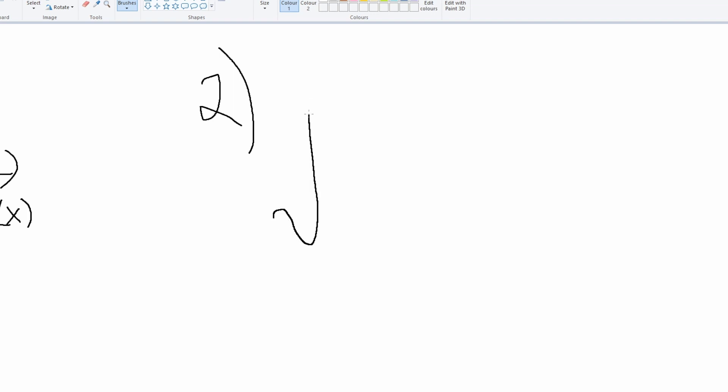The second question is a definite integral, so it has bounds. The integral from 1 to square root of 3 of (arctan(x) + arccot(x)) all divided by x, with respect to x.